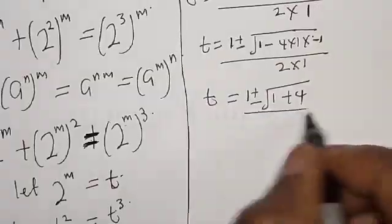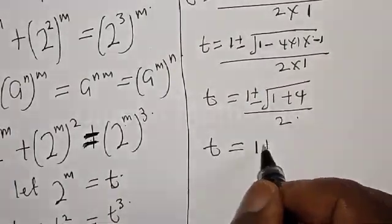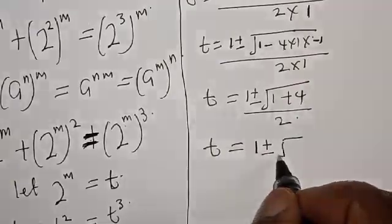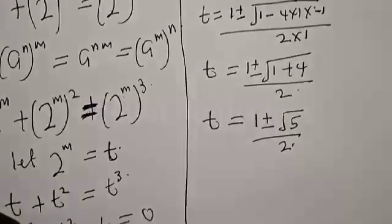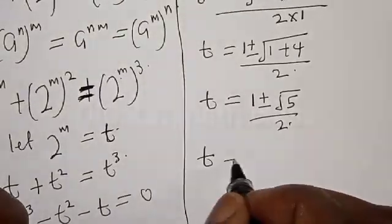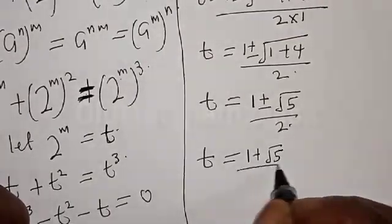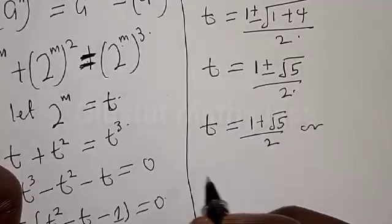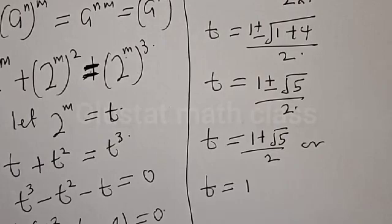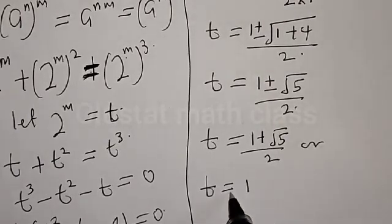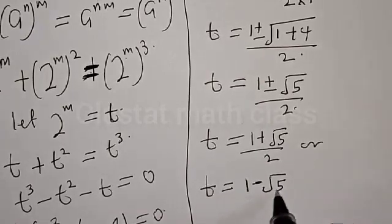This gives t equals 1 plus or minus square root of 5, all over 2. So t equals 1 plus square root of 5 over 2, or t equals 1 minus square root of 5 over 2.